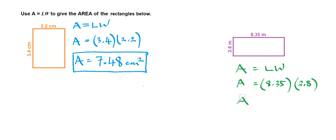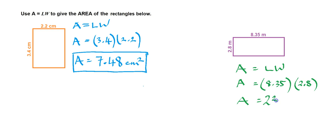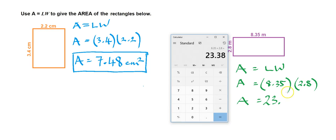And then we just use our calculator to carry out the calculation. So 8.35 multiplied by 2.8, that equals 23.38. So write that down, 23.38.